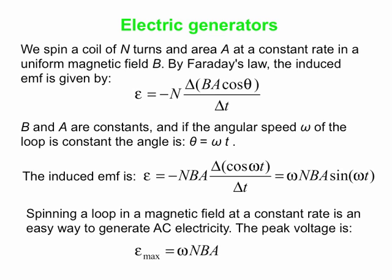So the maximum voltage you generate is the angular speed at which the rotation is happening, multiplied by the number of turns, multiplied by the magnetic field, multiplied by the area. And just in case you're slightly confused by this, this is not WNBA. We're not talking about women's basketball here. We're talking about omega NBA. So that's how you generate electricity. Spin a coil in a magnetic field. Piece of cake. So that is all for today. Bye-bye.